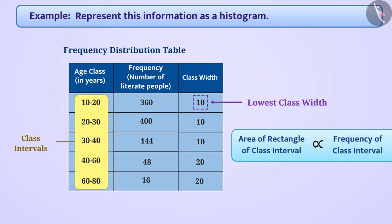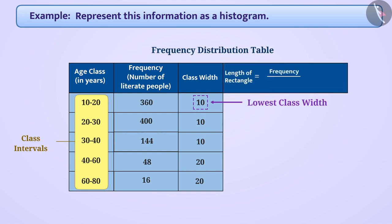Now we will change the lengths of the rectangles in such a way that class width is proportional to 10. For this, we will divide the frequency of each class interval by its class width and multiply it by the minimum class width of 10.